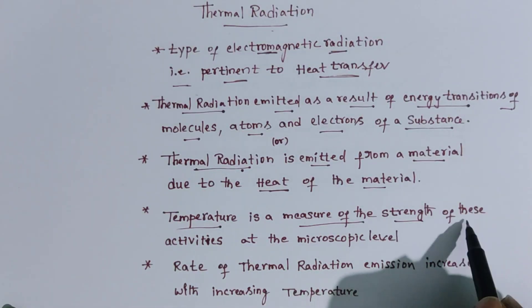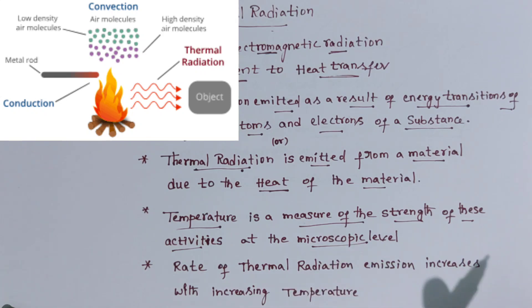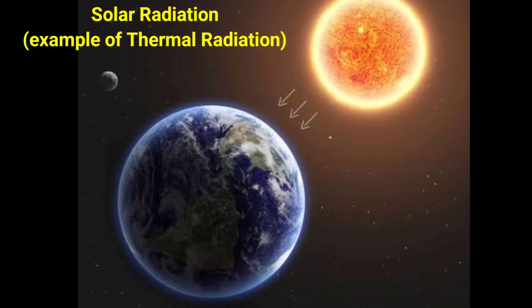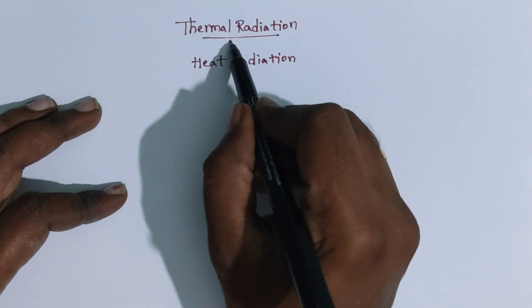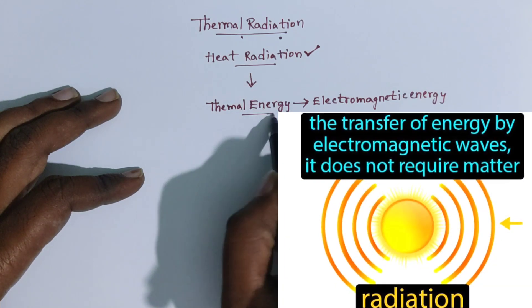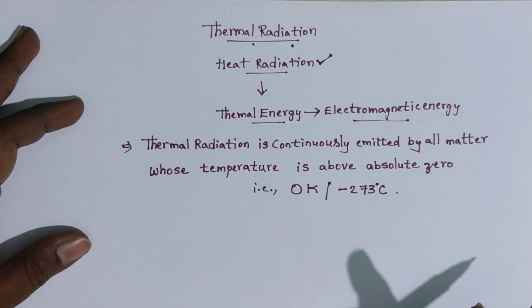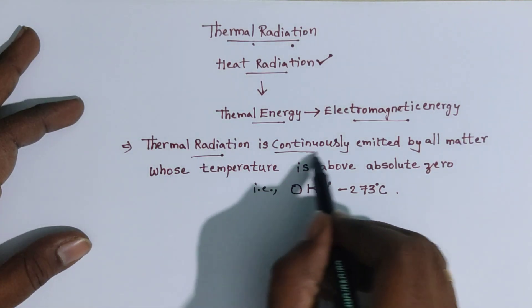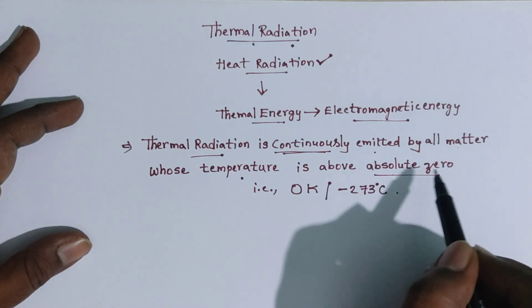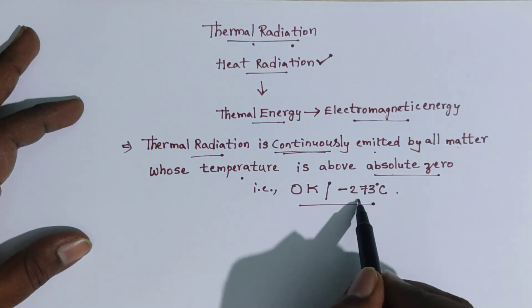Temperature is a measure of the strength of these activities at the microscopic level. The rate of thermal radiation emission increases with increasing temperature, and decreases as temperature decreases. Thermal radiation is also called heat radiation, where thermal energy is converted into electromagnetic energy. It is continuously emitted by all matter whose temperature is above absolute zero — that is, 0 Kelvin or minus 273 degrees Celsius.